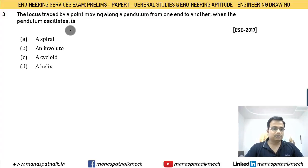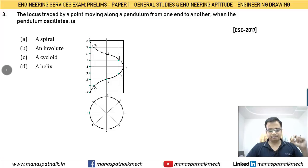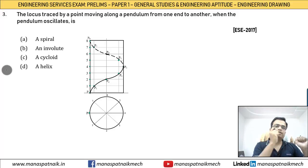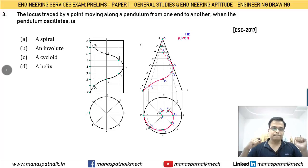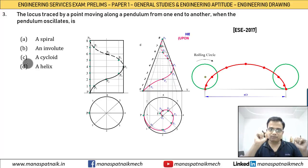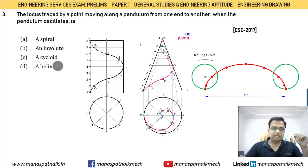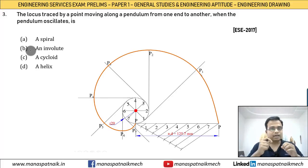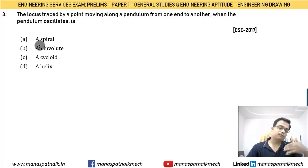You can solve this using the elimination method. A helix is formed when a point moves along and around the surface of a cylinder (cylindrical helix) or along a cone (conical helix). A cycloid is obtained when a point on the perimeter of a rolling circle traces its locus. An involute is associated with winding or unwinding of a string or wire. The only option left is a spiral.